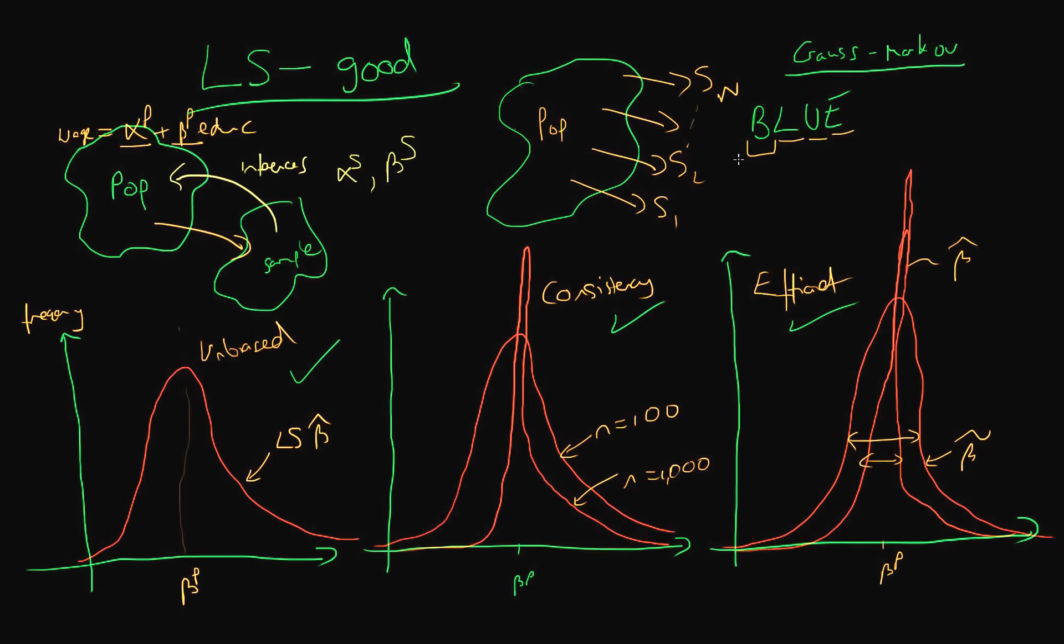But note that estimators being BLUE is a property which we really like. That means that there are no other linear estimators which we can apply to our samples, which give us good or unbiased estimates of the population parameters. There are no more efficient estimators to do that. So this is a really, really important thing.